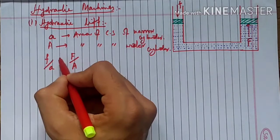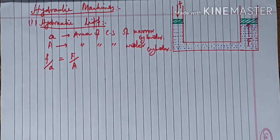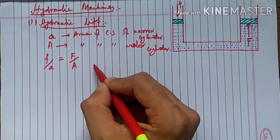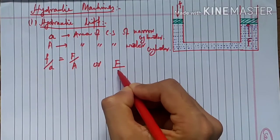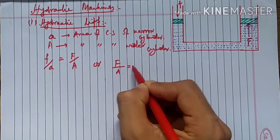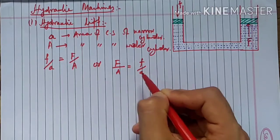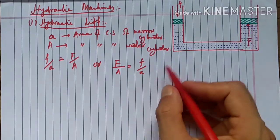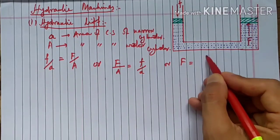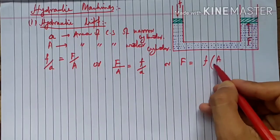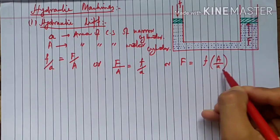According to Pascal's law, the pressure at each point must be equal. So we can write: F divided by A equals f divided by a. Rearranging, F equals f multiplied by A divided by a.